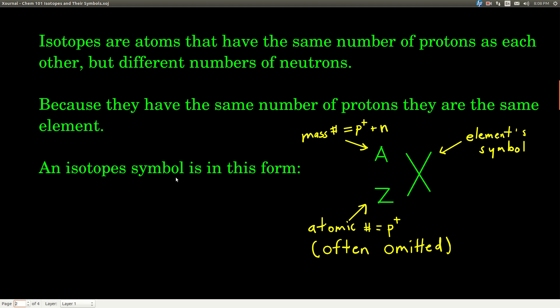The symbol for an isotope is written in this form where X is the symbol for the element. For example, if it's carbon, there would be a C in place of X. A is the mass number - it's always an integer and it's the number of protons plus the number of neutrons.